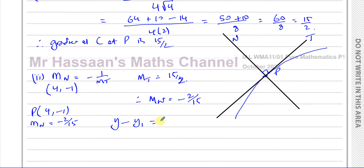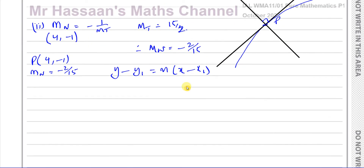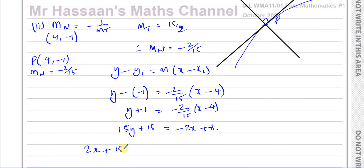Using the formula y minus y1 equals m times x minus x1, we get: y minus (−1) equals −2/15 times (x − 4), giving y + 1 = −2/15 × (x − 4). Multiplying both sides by 15: 15y + 15 = −2x + 8. Adding 2x to both sides: 2x + 15y + 7 = 0.